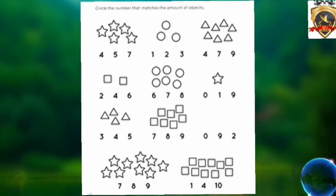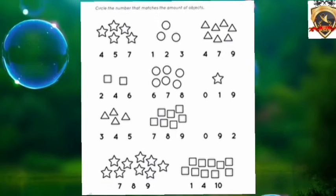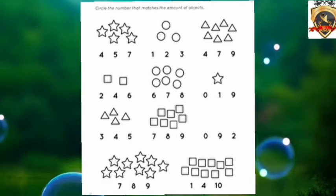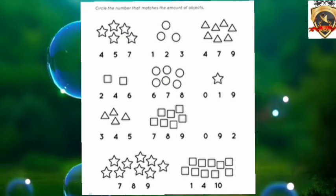First picture is stars. Count it: 1, 2, 3, 4, 5. Circle the number 5.